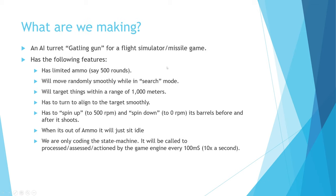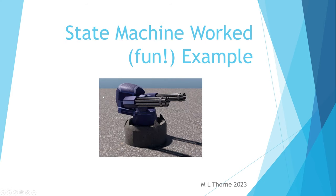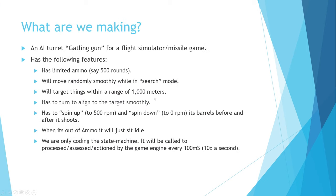So let's have a look at what we've been tasked. We've got instructions from our software development team saying: get the AI sorted out for a Gatling gun for a flight simulator missile game. It's going to have limited ammo — about 500 rounds. It's going to move randomly and smoothly while in search mode. It will target things within a range of a thousand meters, has to turn to align the target smoothly, has to spin up the Gatling gun barrels to an RPM before they start firing bullets, and when it's finished firing or the target's gone, it needs to spin them down.